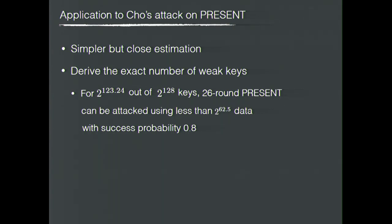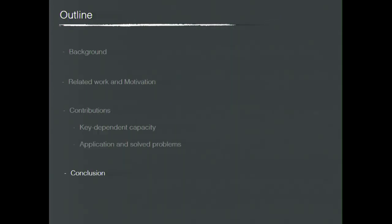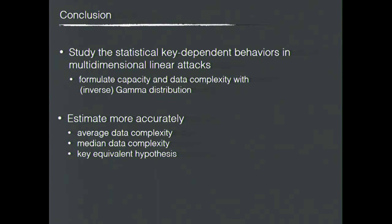We can also calculate the number of weak keys precisely. For example, for 2^{122} keys, the 26-round PRESENT can be attacked using less than 2^{62.5} data complexity with success probability 0.8. In conclusion, in our work we study the statistical key-dependent behaviors in multidimensional linear attacks. We formulate the capacity and the data complexity using a gamma distribution and inverse gamma distribution, and with this knowledge we can estimate the average data complexity, the median data complexity, and the key equivalence hypothesis more accurately. Thank you.